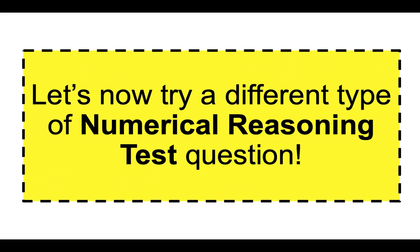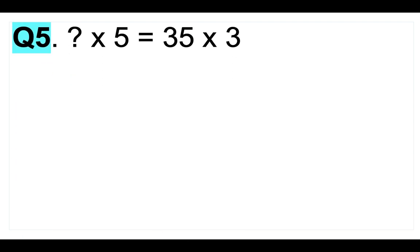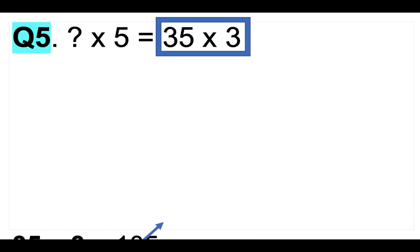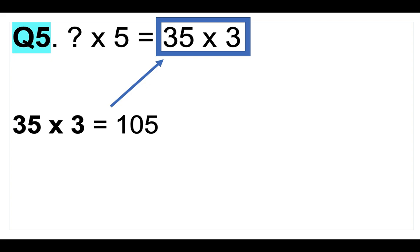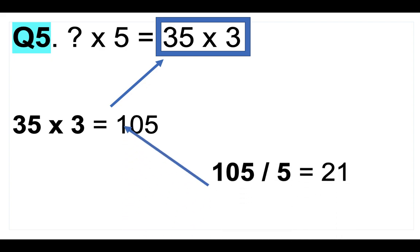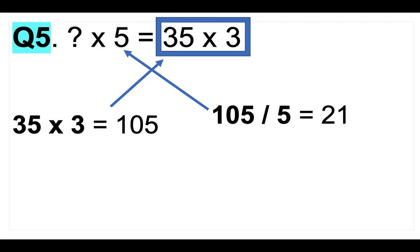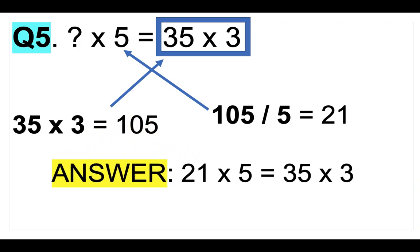Let's now try a different type of numerical reasoning test question. Question number five: what multiplied by 5 equals 35 times 3? All we need to do is work out 35 times 3, which is 105. Then divide 105 by 5 to get the answer, which is 21. So 21 multiplied by 5 equals 35 times 3. The answer is 21.